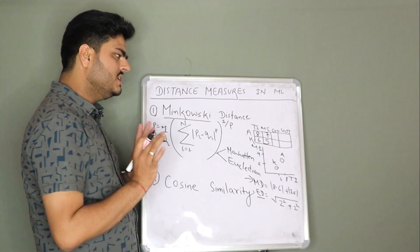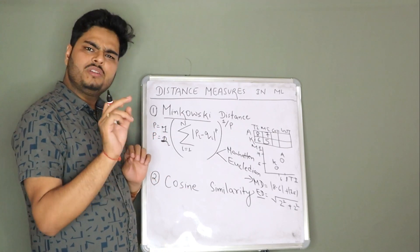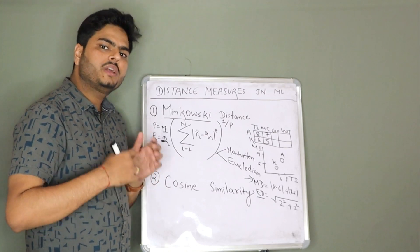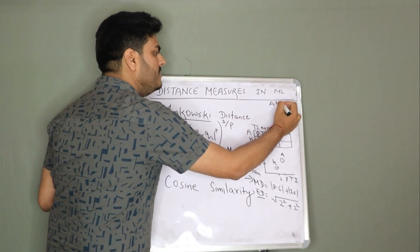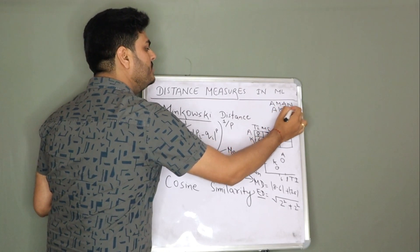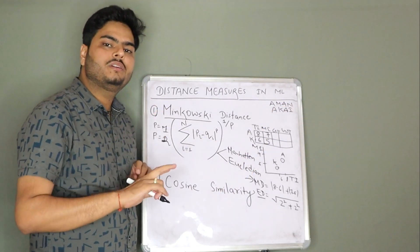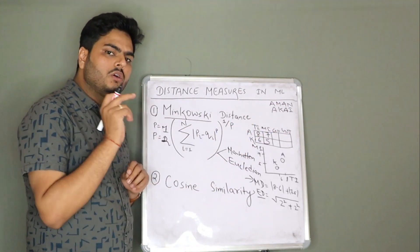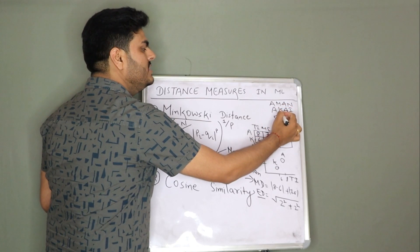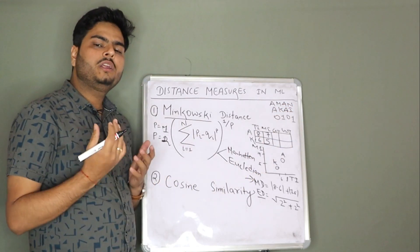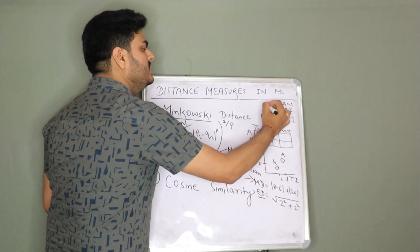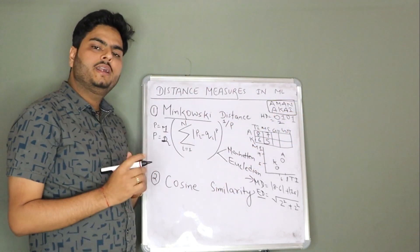Now, one simple thing before we go on to cosine is known as Hamming distance — very simple to understand. Hamming distance is defined for two strings, for characters. Let us say one character is Aman — A-M-A-N — and another character is A-K-A-I. Hamming distance can only be computed between strings of similar length. How Hamming distance is calculated: if bitwise the values are the same, it gives distance 0; if bitwise values are different, it gives distance 1, and in the end it adds them. So here, the Hamming distance will be 1 + 1 = 2 between these two strings.